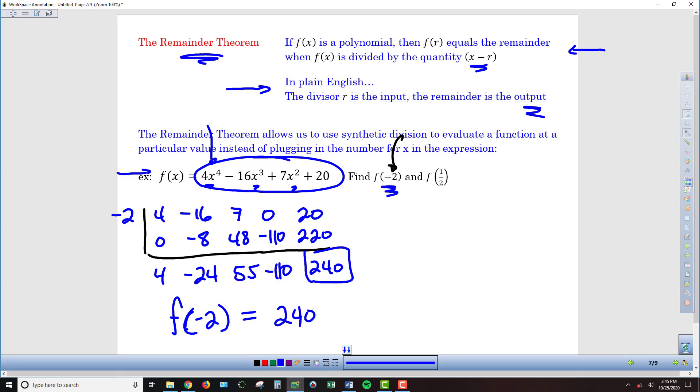I would argue that's a lot easier way to get to that answer than, like I said before, raise negative 2 to the 4th power and then multiply by 4, and then raise negative 2 to the 3rd power, multiply it by negative 16, and so on to get to that same result.